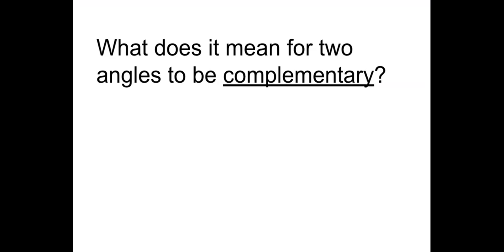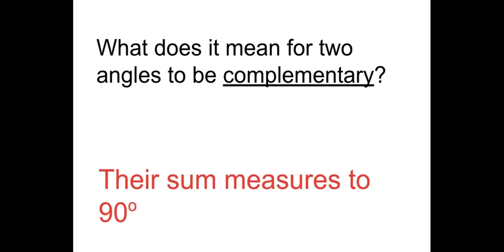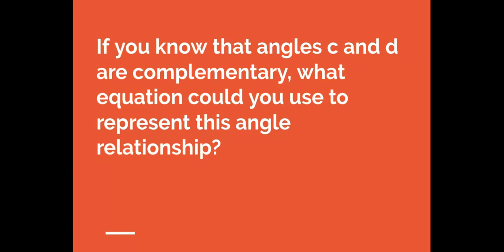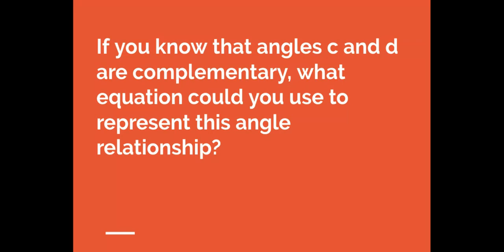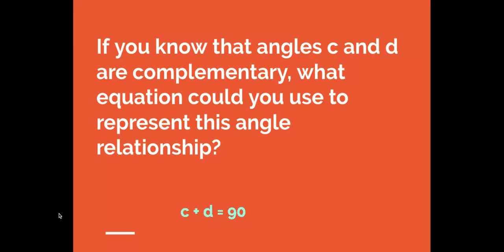Let's have a quick review. What does it mean for two angles to be complementary? It means their measures sum to 90 degrees. If we know that angles C and D are complementary, we can write the equation C plus D equals 90.